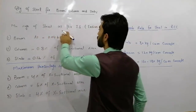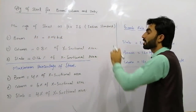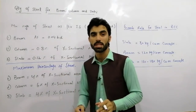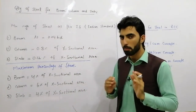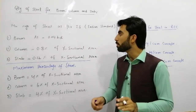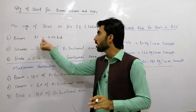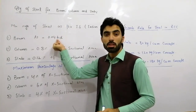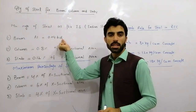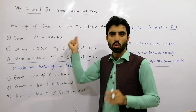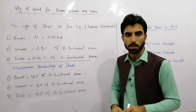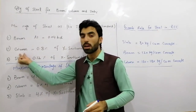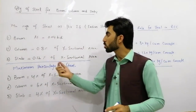The minimum percentage of steel per IS standard code: for a beam, the minimum area of steel AS is equal to 0.04 × B × D, where B is the breadth of the beam and D is the depth of the beam. This formula gives you the minimum quantity of steel for an RCC beam.